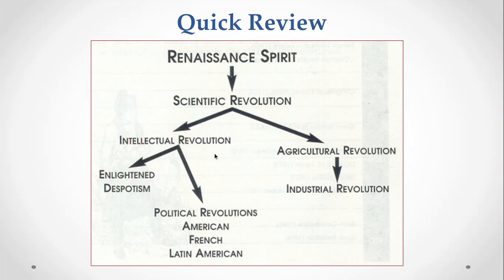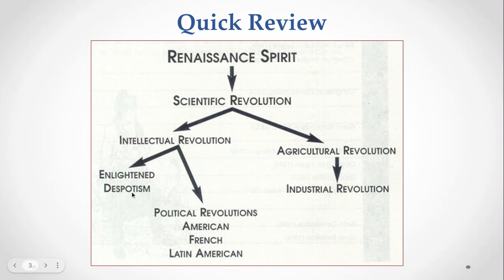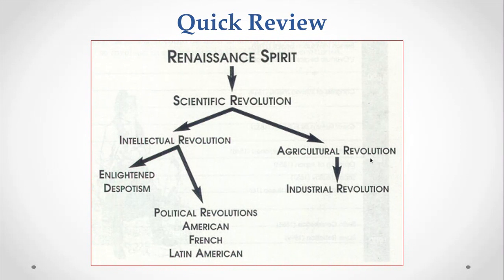If you think back to the Renaissance in Unit 4, that's going to spark the Enlightenment and the Scientific Revolution, where science is going to be applied to life. We've talked about the intellectual side — the Enlightenment — people fighting against absolute monarchs and despotism. It's going to lead to different revolutions. We're going to talk about the American Revolution today, the French Revolution next, and then the Latin American Revolution. There's also an agricultural revolution happening, which is going to lead to the Industrial Revolution later in this unit. A lot of this is happening at the same time.